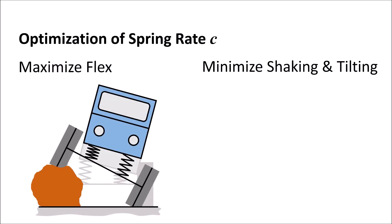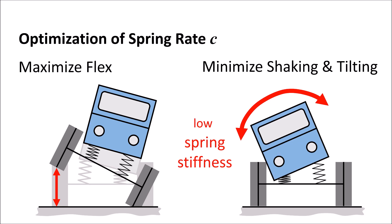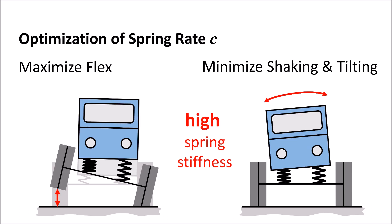How do we get the optimal spring rate? If the stiffness is too low, we get too much shaking and tilting. If it is too high, we cannot fully exploit the maximum possible flex of the crawler.